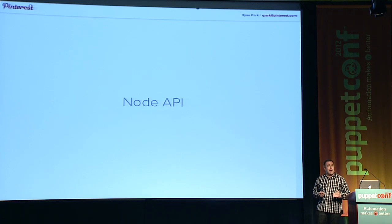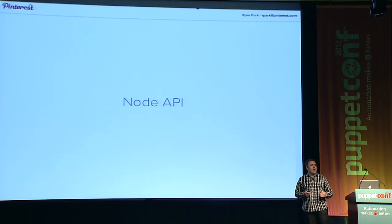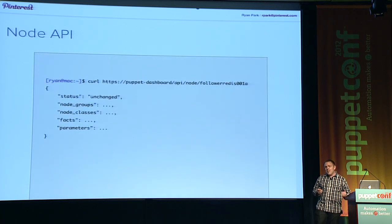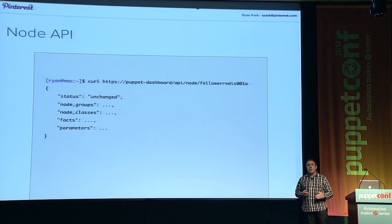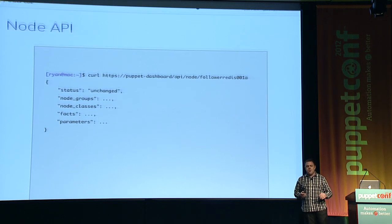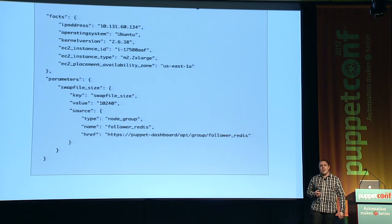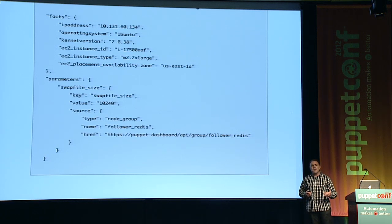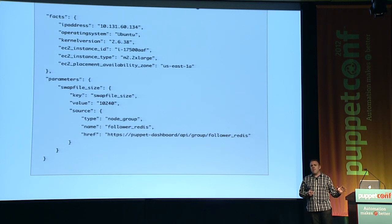Now let's look at how a node is represented in the API. The data shown here has been sanitized — it's not exactly how things look in our production environment. But the data format is how it is in production. It lists the node groups, classes, and things installed on this particular node. You can see what groups a node belongs to and what classes have been installed. You can also get the fact data — the same kind of thing you'd see in Facter from the command line — including the IP address, operating system, and EC2-specific facts.